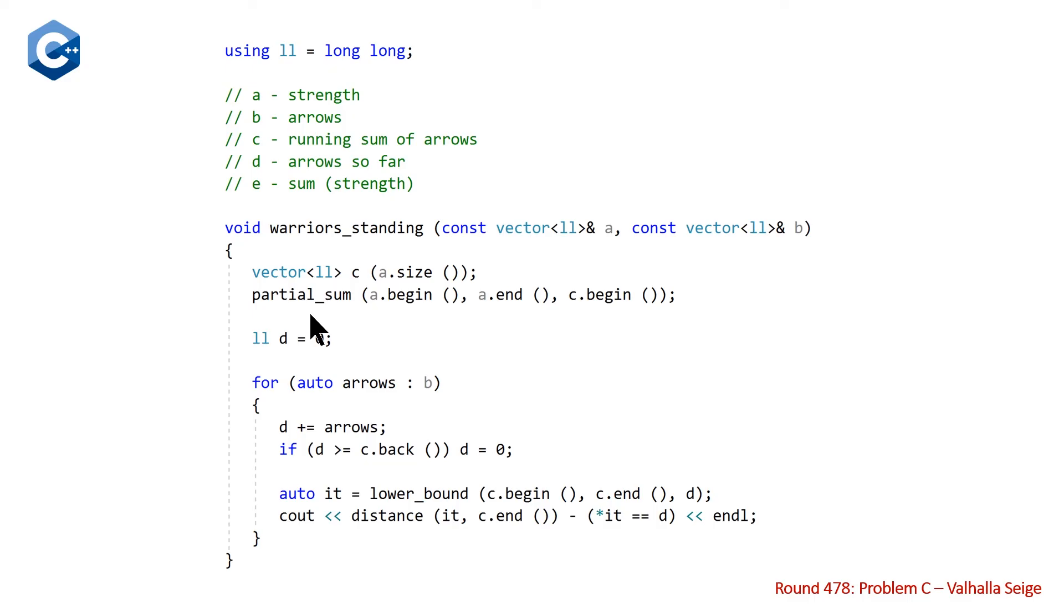And we enter our function. The first thing we're going to do is create another vector c, which is going to store our running sum. So we'll use this as the output in our partial sum function, and we're going to initialize this to be the same size as our vector of strengths. Then we just call partial_sum, giving it the range for begin and end of our vector a and an output iterator to the beginning of c. And this is going to give us our running sum, which we saw in the second part of our visual demonstration.